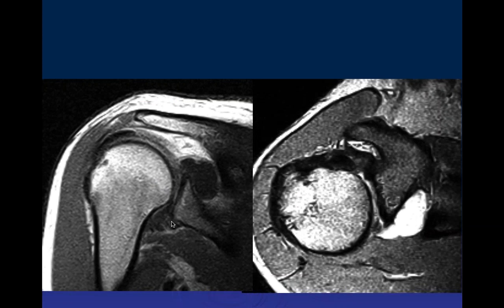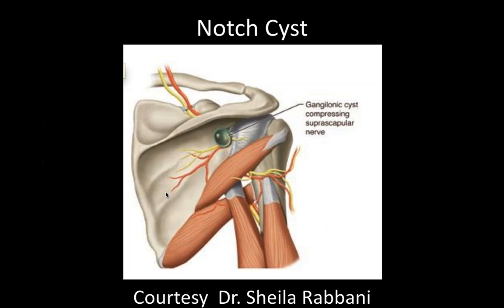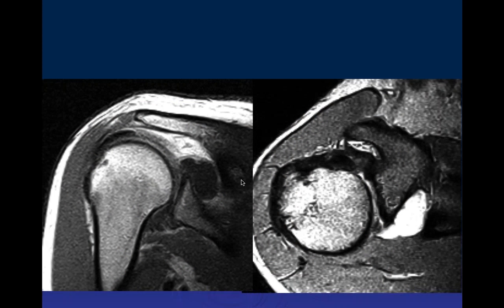Here's another diagram showing a cyst compressing the nerve. This is the axillary nerve — the axillary nerve is down here.